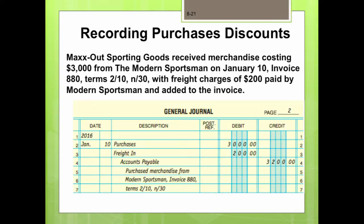To record purchase discounts: Max Out Sporting Goods received merchandise costing $3,000 from Modern Sportsman on January 10th, invoice number 880, terms 2/10 net 30, with freight charges of $200 paid by Modern Sportsman and added to the invoice. Max Out Sporting Goods records: debit purchases for $3,000, debit freight in for $200, and credit accounts payable for $3,200, for the purchase of merchandise on invoice 880 with terms 2/10 net 30.